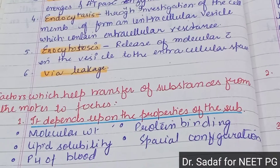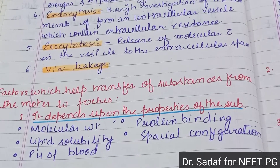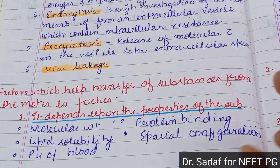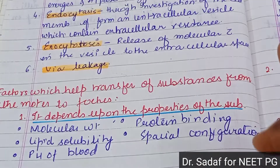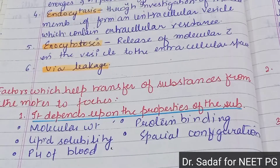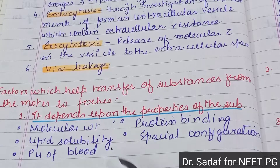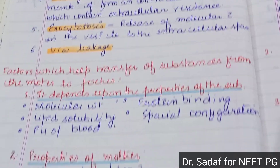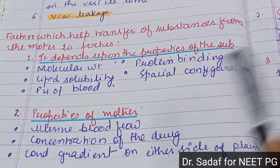What factors help to transfer substances from the mother to the fetus? It depends on the properties of the substance: molecular weight, lipid solubility, pH of the blood, protein binding, and spatial configuration. Other factors include uterine blood flow and the concentration of the drug.